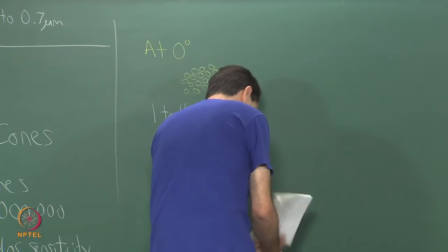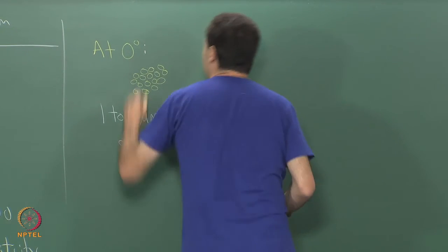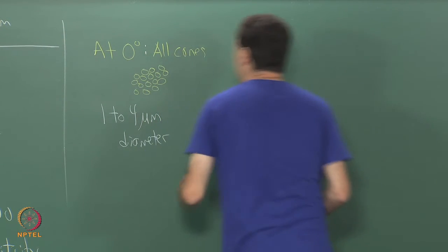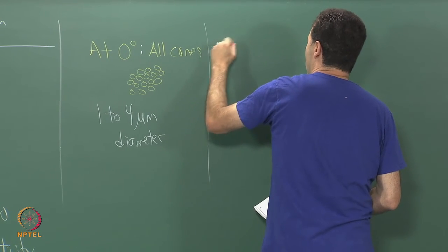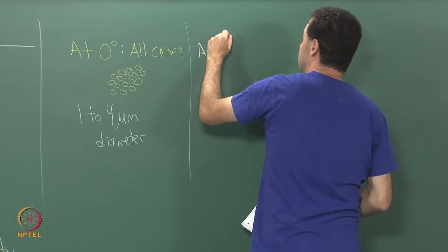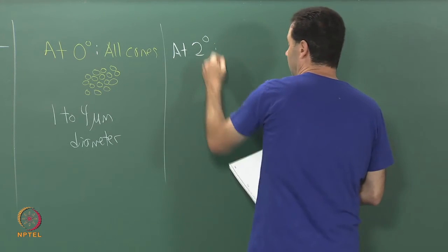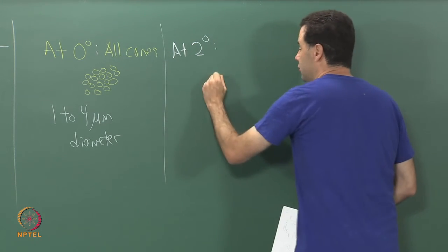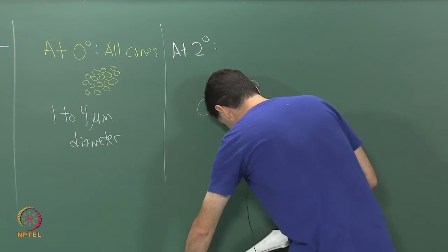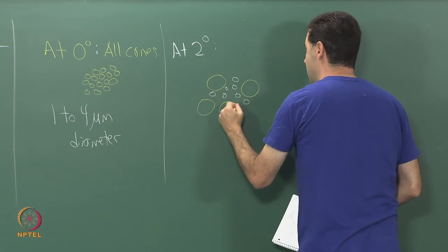At 0 degrees it is all cones. Already when you get over to 2 degrees off, you are leaving the fovea. What happens there is the cones already are getting bigger, and rods start appearing among them.